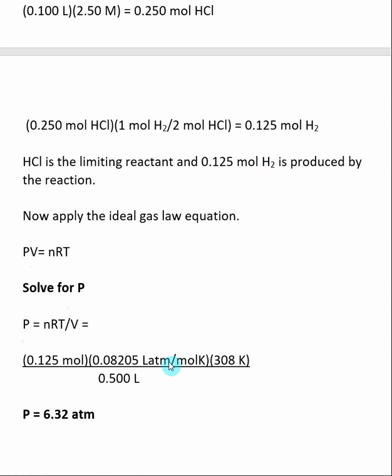R is a constant. The temperature was given in degrees C and we needed to convert that to K, and we were told that the volume was going to be 500 milliliters or 0.5 liters. When I'm done with the calculation, I get a pressure of 6.32 atmosphere.